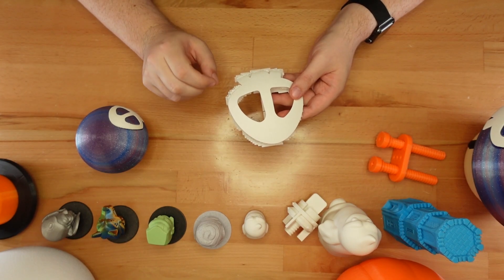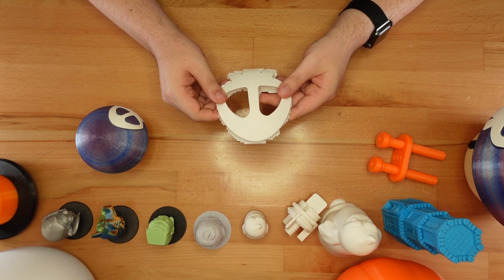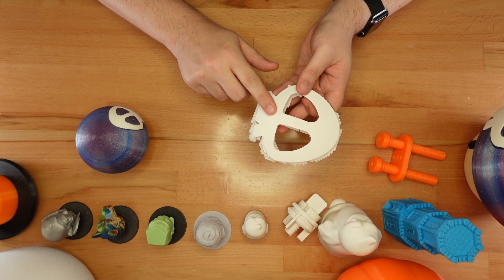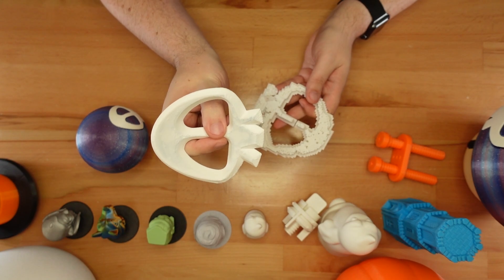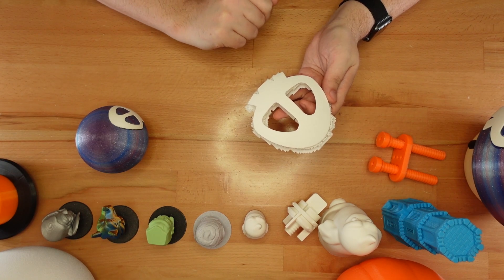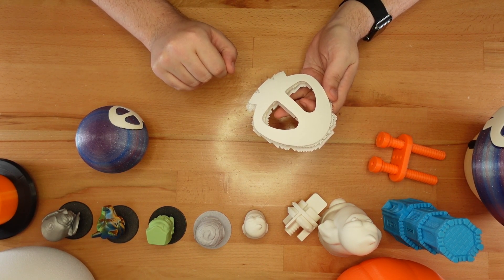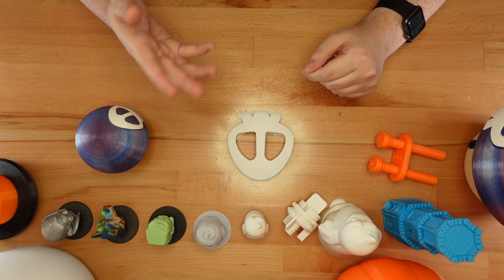Of all the designs I've shared in this video, this is the only one that actually does require supports. The skull emblem has a curved back. This is to maximize storage space inside the mushroom. But if you print it flat, like this, any scarring from the supports will be completely hidden once the skull is glued in.